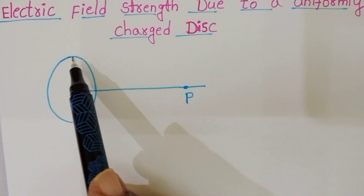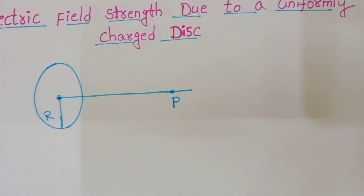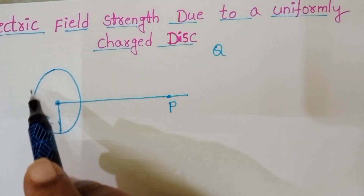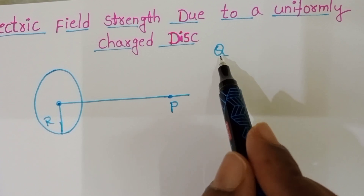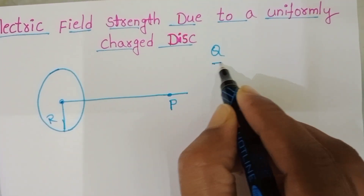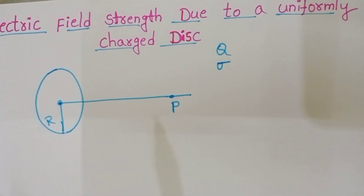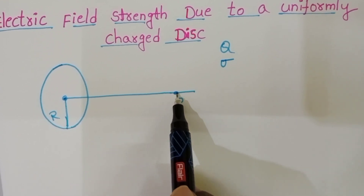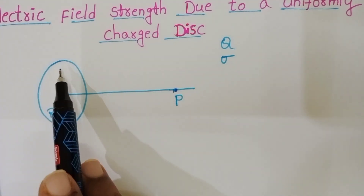Consider a disc of radius r, with q amount of charge distributed over the surface of this disc. The charge is distributed uniformly over the surface of the disc. Sigma is the surface charge density, and here the charge distribution is a continuous charge distribution.